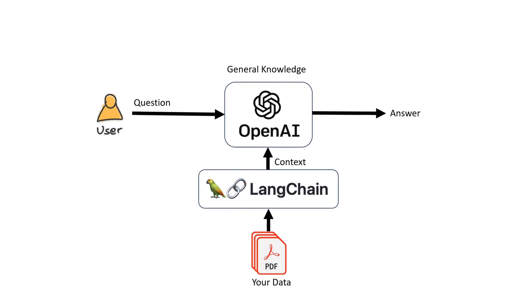Langchain is an open source framework that allows AI developers to connect or chain large language models like ChatGPT with external sources of data. In fact, with Langchain, you can convert your data into context information that can be used by your chosen language model to provide specific responses to your questions or queries.